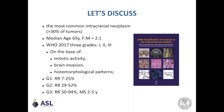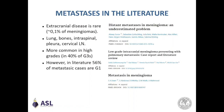Extracranial disease is rare in meningiomas. Approximately 0.1% of meningiomas develop metastasis during their lifetime. The most common sites are lung, bones, intraspinal, pleura, and cervical lymph nodes. It is, of course, more common in high-grade tumors. However, in the literature, 56% of metastatic meningiomas are of low grade, possibly due to a selection bias — no one pays much attention when a high-grade tumor metastasizes, but when a tumor considered borderline benign becomes metastatic, it raises a lot of eyebrows.